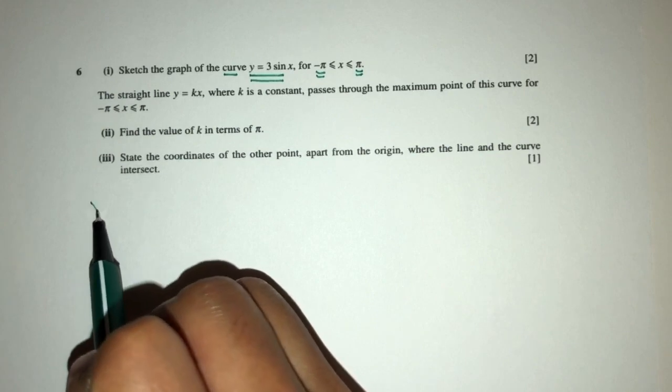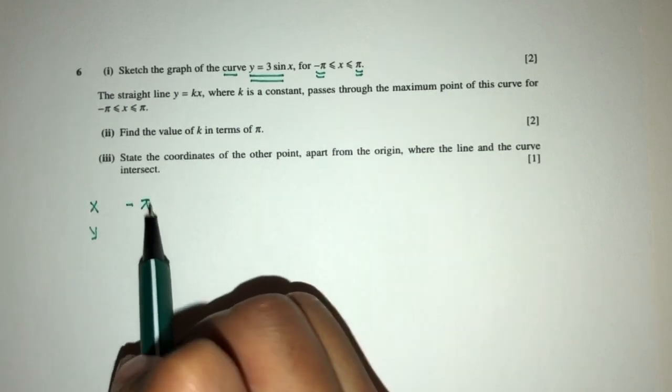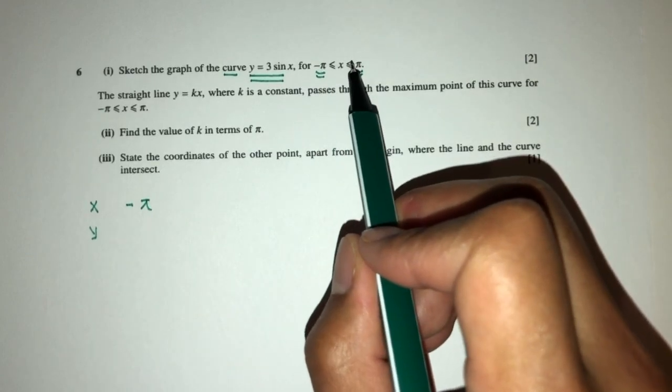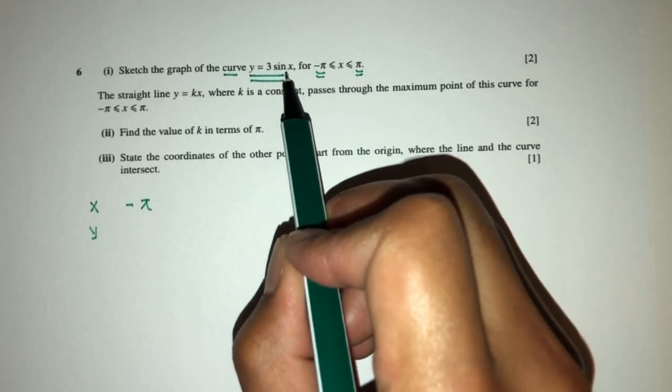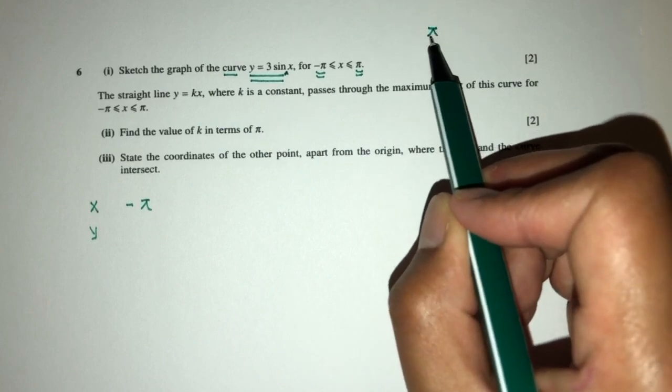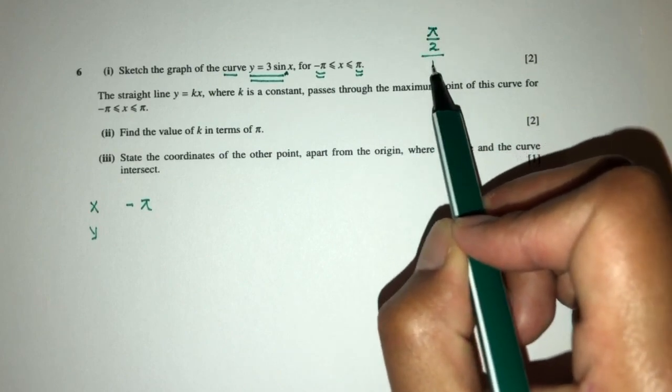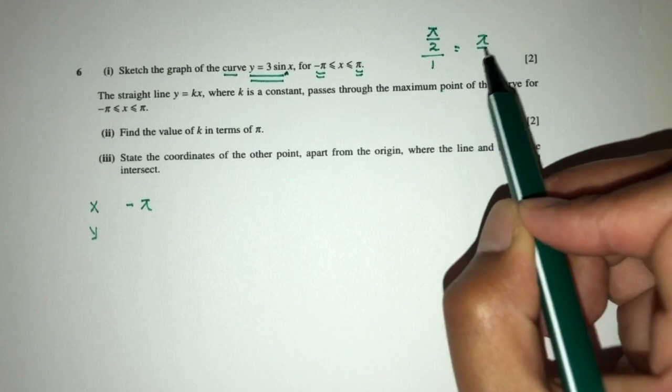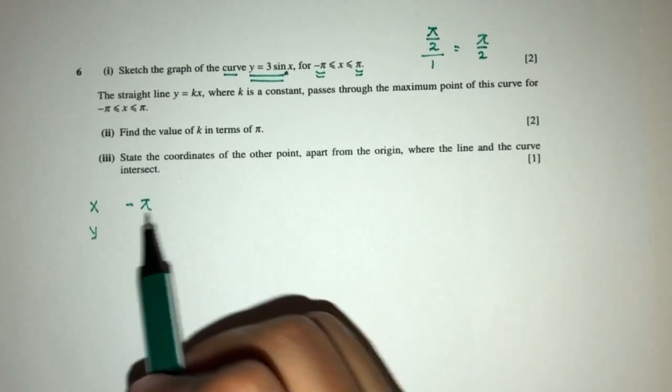Now part one, this is my x value and my y values. And what is the interval we have to choose? To choose the interval we have to look at the value here. It is 1, so that will be pi by 2 divided by 1, that is simply pi by 2.